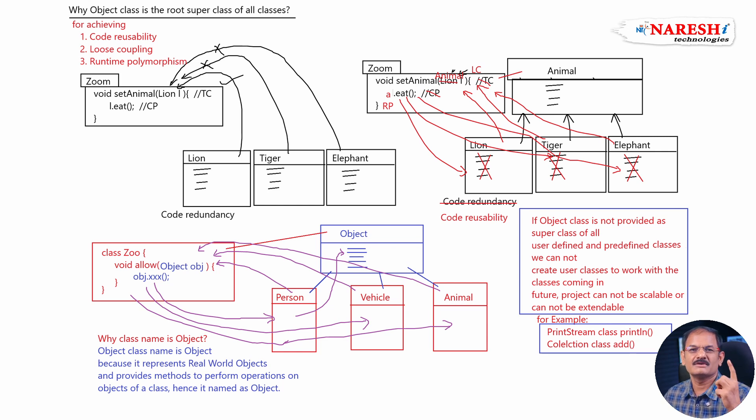Four important points: what is java.lang.object, why java.lang.object class is super class of all classes, prove that it is a super class of all classes, and why object class name is object. These four are the very important points which we have completed now.